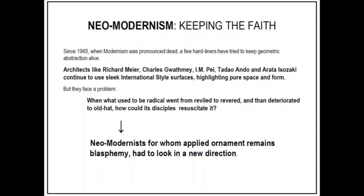Here we see the rationale behind the emergence of Neo-Modernism. Since 1965, Modernism started to fade out, and a few hardliners tried to keep the geometric abstractions alive. Architects like Richard Meier, Charles Gwathmey, IM Pei, Tadao Ando, and Arata Isozaki continued to seek sleek international style surfaces highlighting pure space and form, but faced the problem of how to revive these principles as Modernism was pronounced dead.